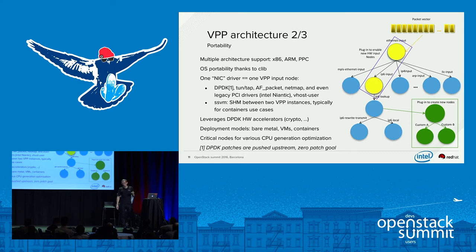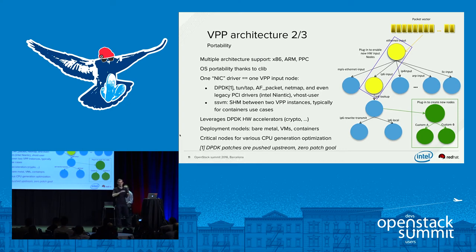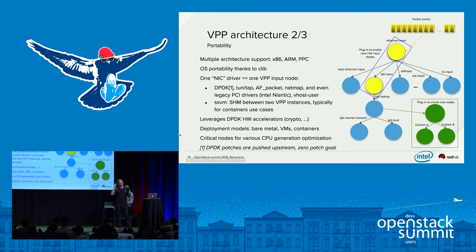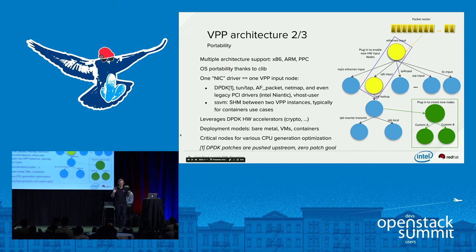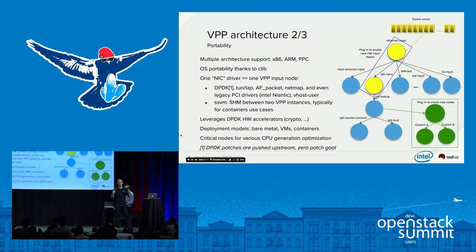In terms of portability, VPP is portable on multiple architectures: x86, ARM, PowerPC, and can be easily ported to others. It's ported on various operating systems through an abstraction layer named CLIB. For NIC support, a driver is essentially an input node. Available input nodes today include DPDK, TunTap, AFPacket, NetMap, and even a legacy driver. Also the vhost-user to interconnect VMs to VPP, plus a shared memory implementation named SSVM for VPP instances in different containers. VPP also has nodes leveraging hardware accelerators, for instance for IPsec offloading. You can deploy VPP on the host, bare metal, as a vSwitch, as a router, in VMs, or in containers.